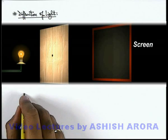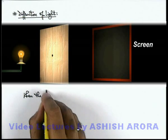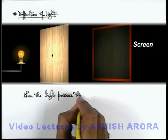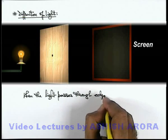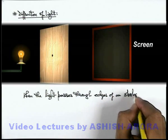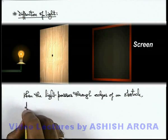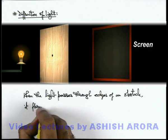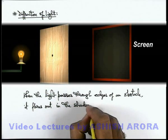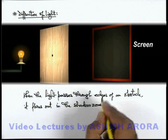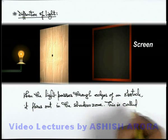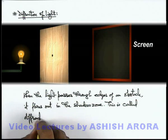Now in this situation we can write: when the light passes through the edges of an obstacle, it flares out into the shadow zone, if the size of the obstacle is very small. And this is called diffraction of light.